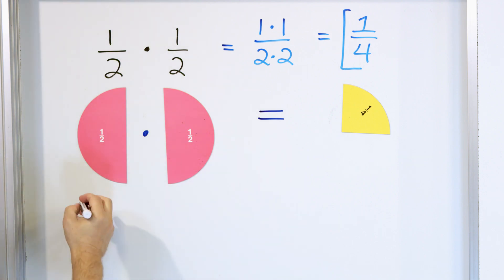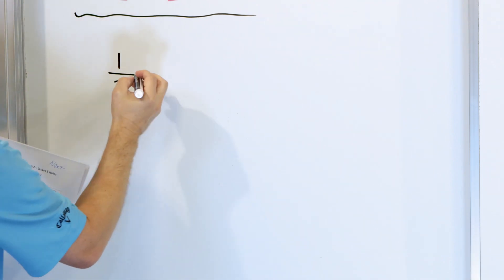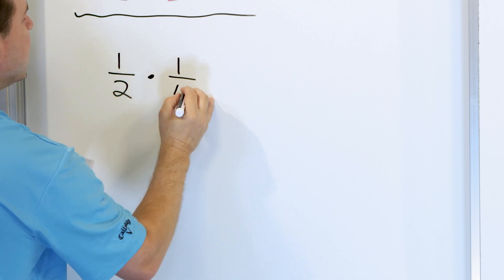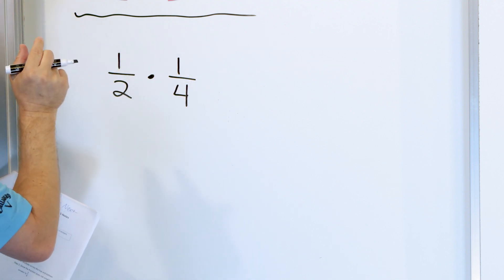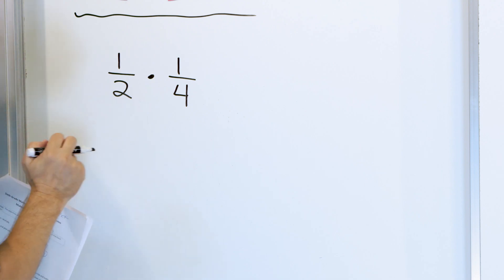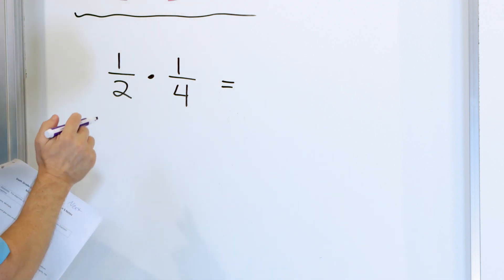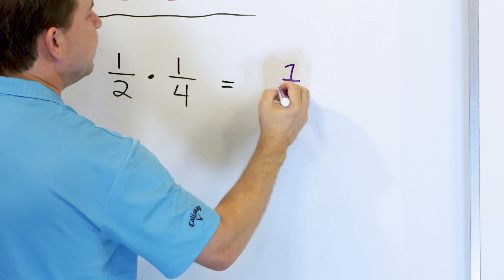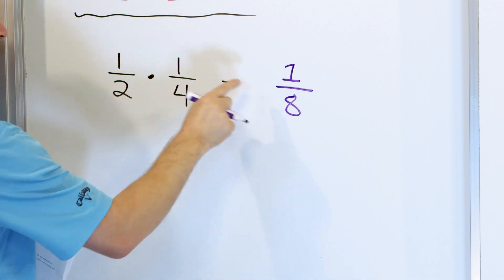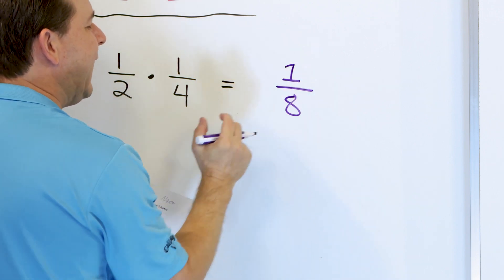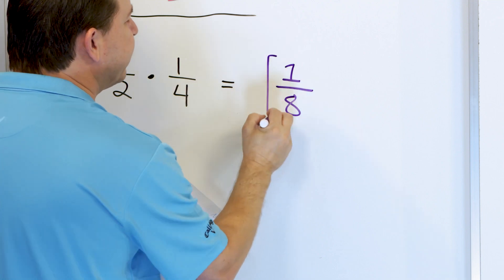Let's move on to problem two. We have the fraction one half again, but instead of multiplying by a half, we'll multiply by one fourth. So we're starting with half of a pizza but cutting it to one fourth of the size it originally was. To get the answer, multiply the tops: one times one is one. Multiply the bottoms: two times four is eight. Can we simplify? We can't, so the answer is one eighth.